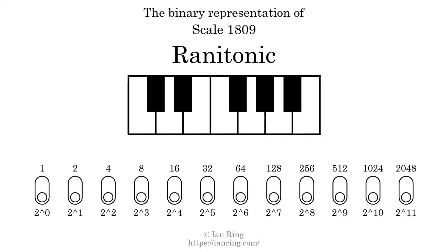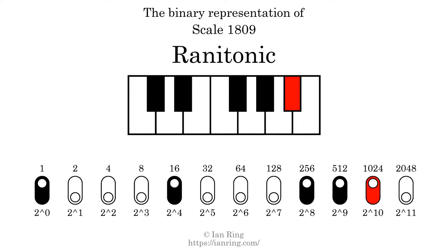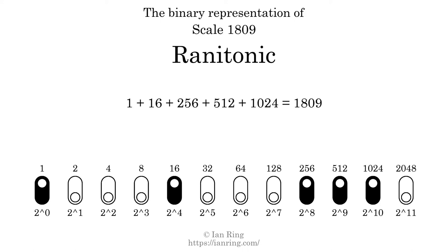The binary representation of this scale is determined by mapping tones of the scale to binary digits. Each binary digit represents a power of 2. To get the scale number, we add the powers of 2 together. The powers of 2 that are present in the scale, all added together, equals 1809.